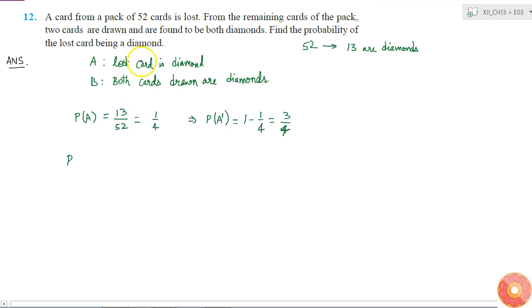Now let us find the probability that both cards are diamonds if the lost card is a diamond. That is probability of B given A. If one diamond is lost, then out of 51, 12 are diamonds. Drawing two cards simultaneously means getting the first card as a diamond and getting the second card as a diamond.